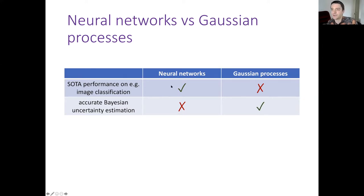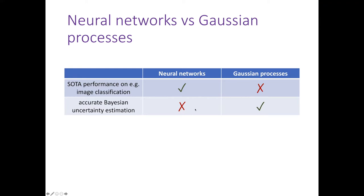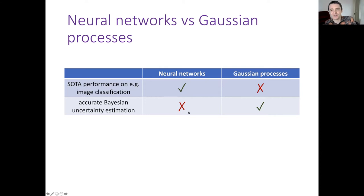At the same time, we don't just want state-of-the-art performance — we also want accurate uncertainty estimation, especially as these models are starting to be put into safety-critical settings such as self-driving cars. Gaussian processes have excellent uncertainty estimation, often in closed form, so it's highly accurate. In contrast, neural networks don't have really effective uncertainty estimation, and the resulting uncertainty estimates are less reliable than those in Gaussian processes.